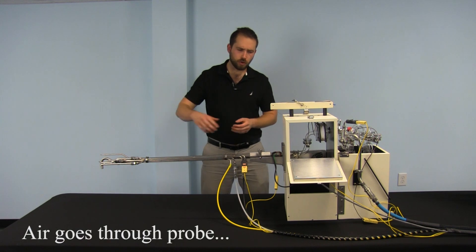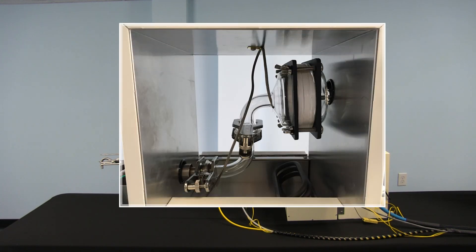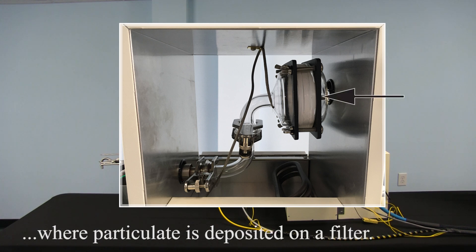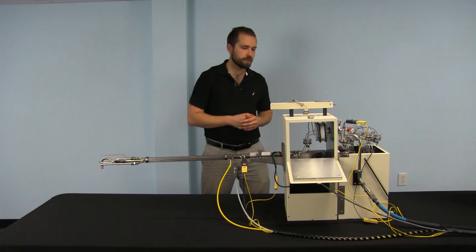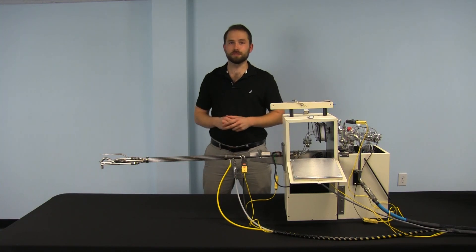As the air goes through the probe it passes through the filter assembly. The filter assembly is a glass leak-free assembly that allows the particulate to be deposited on the filter. This is in large part how we measure the amount of particulate in the source.